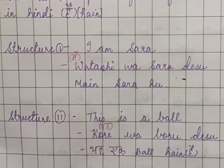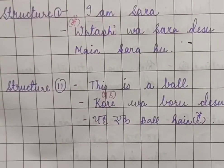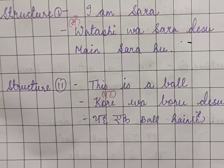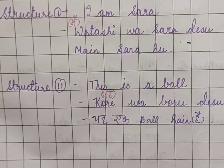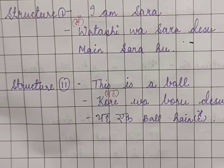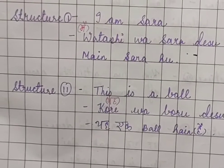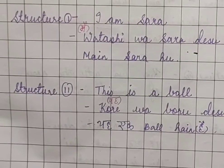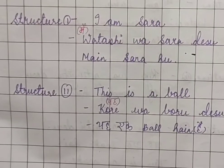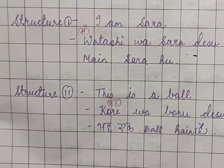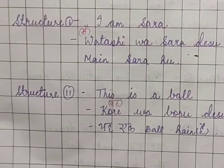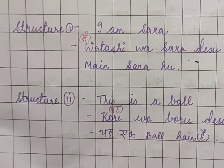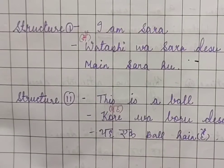Next, let's look at the next structure. This is a ball. What we will say is 'Kore wa boru desu.' Boru is katakana — foreign words use katakana. So in Japanese, 'ball' is 'boru.' 'Kore' means 'this,' so 'Kore wa boru desu' means 'This is a ball.'